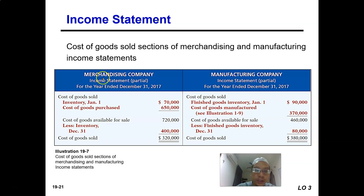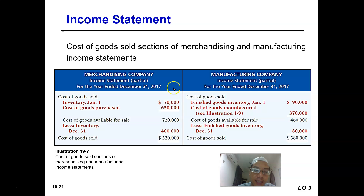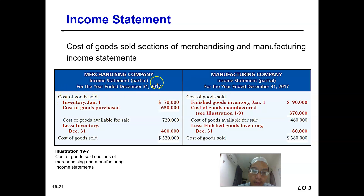Here is a partial income statement showing the cost of goods sold section for both a merchandising and a manufacturing income statement. The left side is the merchandising company and the right side is the manufacturing company. There is a cost of goods sold section on both income statements.